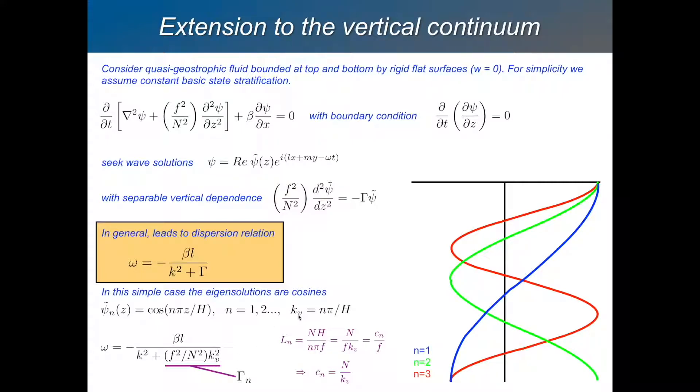So you can define it that way. You can say gamma is the square of the vertical wave number. Remember, wave number is 2 pi over wavelength. So for N equals 2, for example, this is 2 pi over the depth. And so you can express it like that. And for each different mode, you'll have a different phase speed.